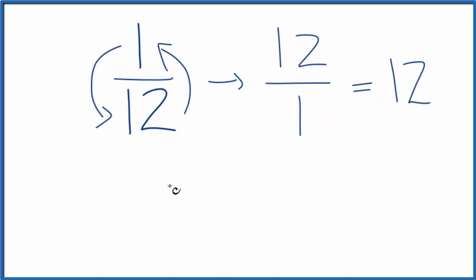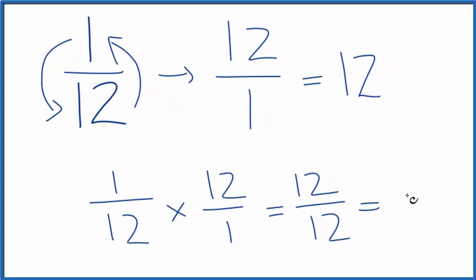We can check our work here. If we take the original fraction 1/12 and we multiply it by the reciprocal, that 12 over 1, we should get 1 as our answer if we did the first part correctly. 1 times 12, that's 12. 12 times 1, that's 12. 12 divided by 12, that gives us 1. So we did the first part correctly.